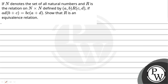Hello, let us read the question. Question says: if N denotes the set of all natural numbers and R is the relation on N cross N defined by (a,b) related to (c,d) if ad(b+c) is equal to bc(a+d), then show that R is an equivalence relation.